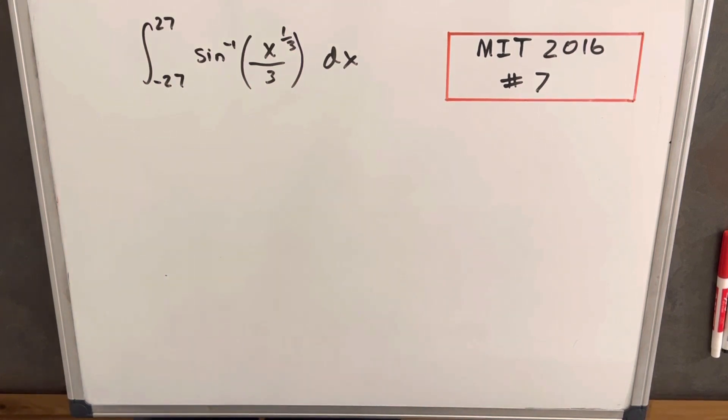Hey, we have here on the board another interesting integral from the MIT Integration Bee 2016. This was problem number seven. We have the integral from 27 to minus 27, sine inverse of x to the 1/3 over 3, dx.